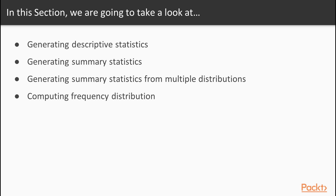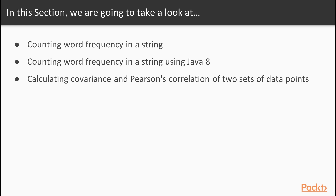We would then compute frequency distribution and count word frequency in a string. Next, we'll use Java 8 to count the word frequency in a string. And lastly, we calculate covariance and Pearson's correlation of two sets of data points.